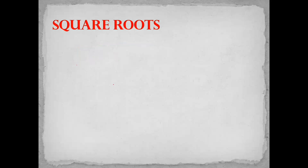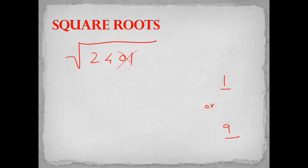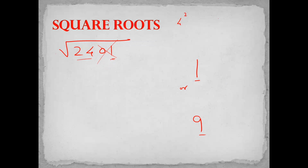Let's take another example: square root of 2401. This number ends in 1. The square of which number ends in 1? The square of 1 or the square of 9. So our answer should end in either 1 or 9. Now I'll cover two digits — I have 24. 24 lies between the squares of 4 and 5, right? So 24 is clearly less than 25. It has to be 4-something, so I'll take the lower number 4. Our answer will be either 41 or 49.